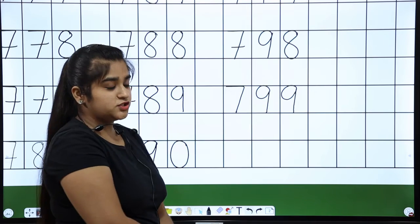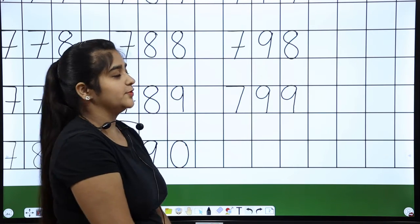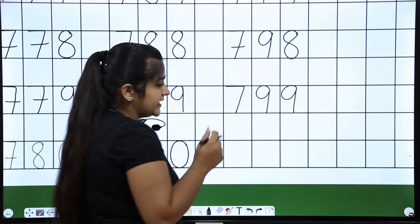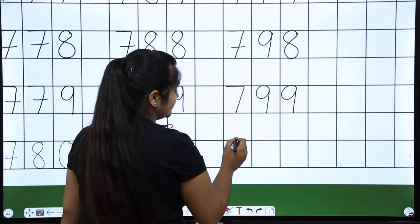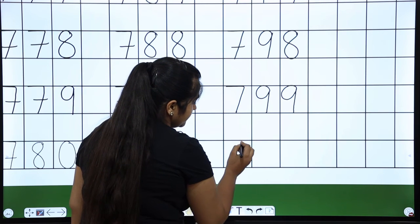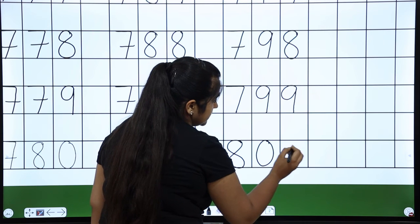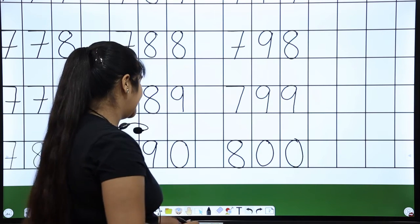Now what comes? After 799, you know that 0-0 is coming. And after 7 is coming 8. So, here our counting finishes at 800. Done?